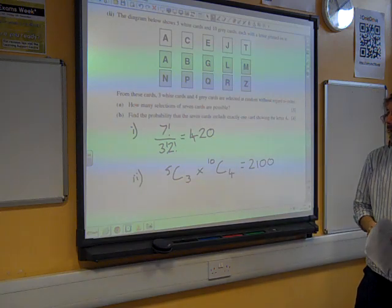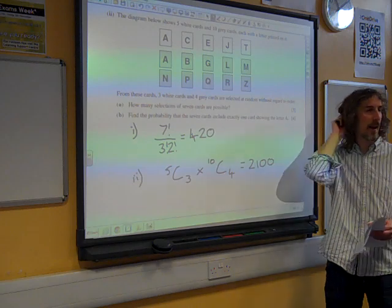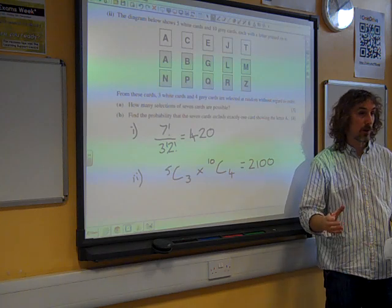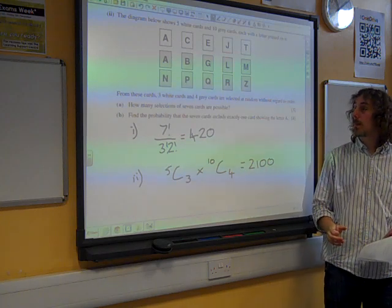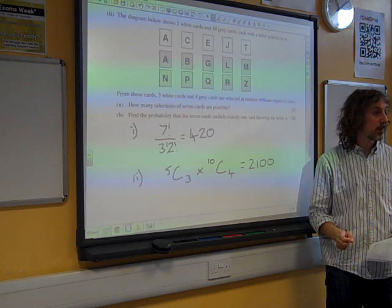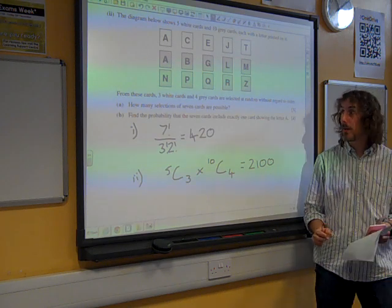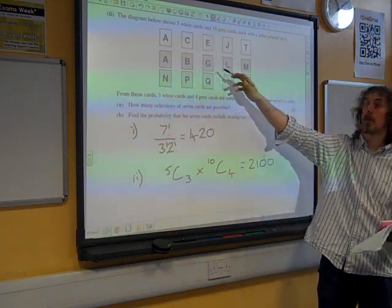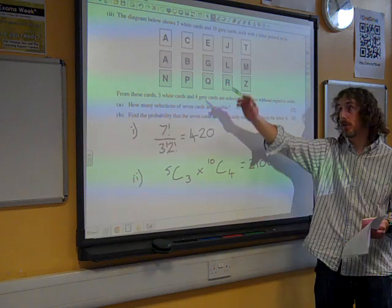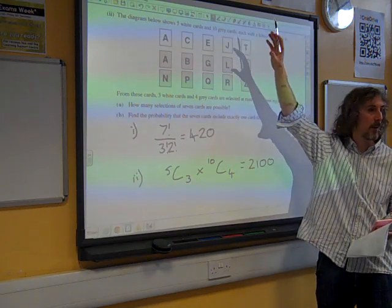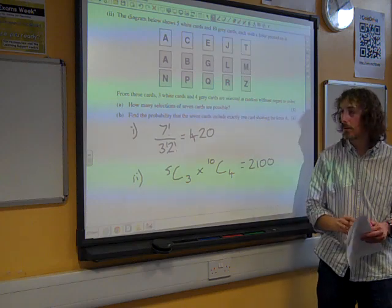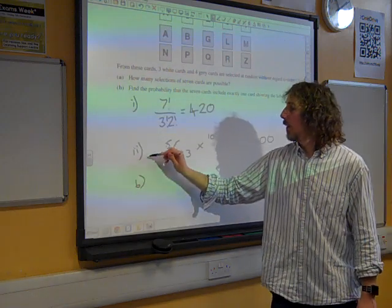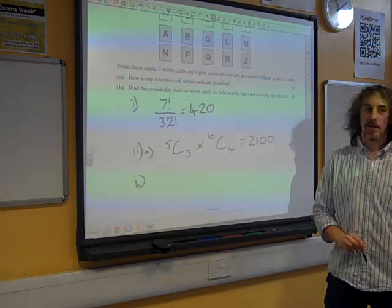Now, a final problem here is that the seven cards include exactly one card showing the letter A. This is one of those sneaky things that comes in at the end, but we can't just dive straight into it, because there are a couple of ways that that could happen. Because that could happen if we chose the letter A from the white cards, but not the letter A from the grey cards. Or it could happen if we chose it from the grey cards, but not from the white cards. So we need to think all the way through these possible ways of doing it.